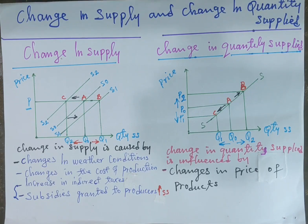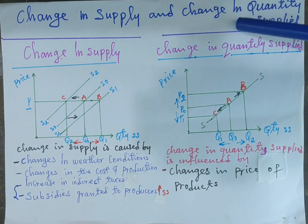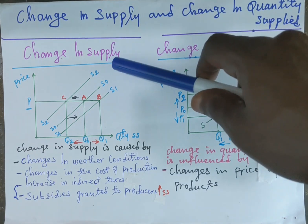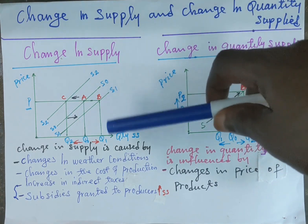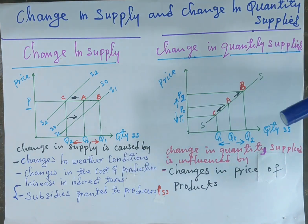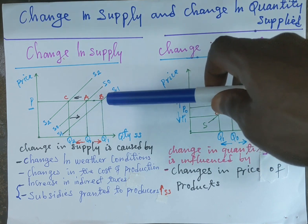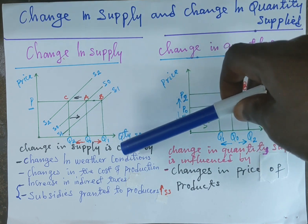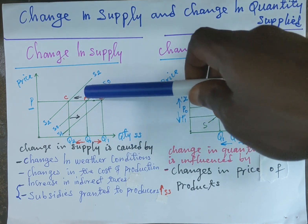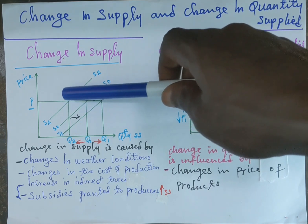Welcome to another session of Sam's Economics Tutorials. In today's video I'm going to be explaining a change in supply and change in quantity supply. A change in supply is the complete shift of the supply curve from its origin either to the right or to the left. The shift of the supply curve to the right shows an increase in supply, while a shift to the left shows a decrease in supply.